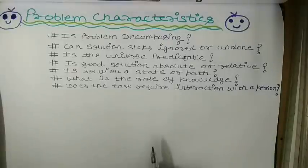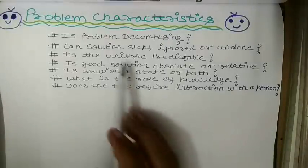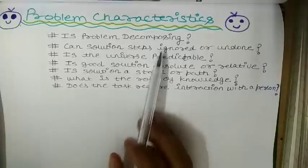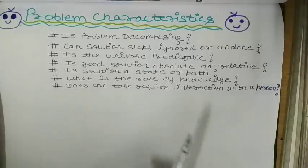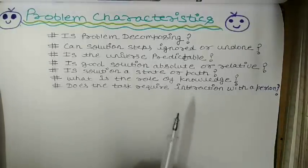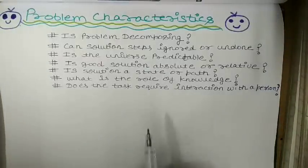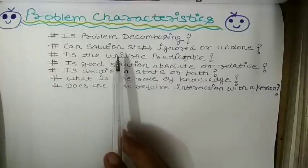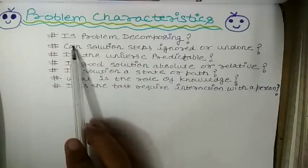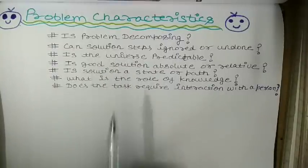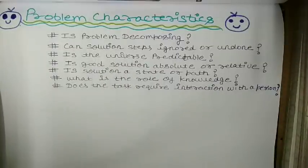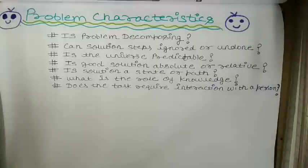In this example, I will briefly explain about problem characteristics, a brief theory about it. So, there are the following problem characteristics. I have written them in short. In books, they are a bit lengthier. I have written them in a shorter way.